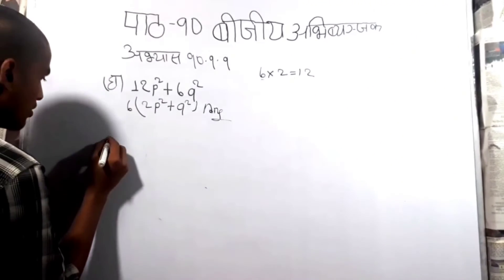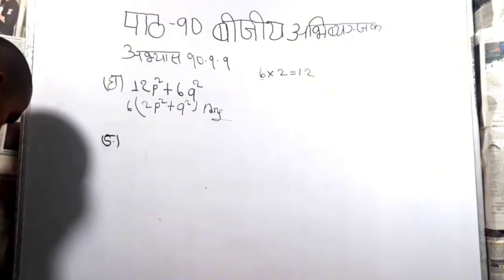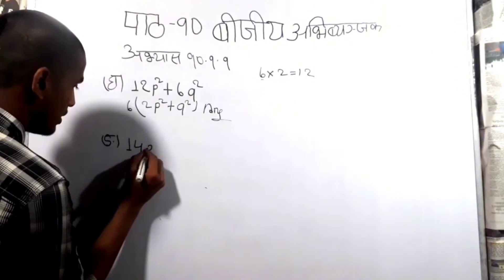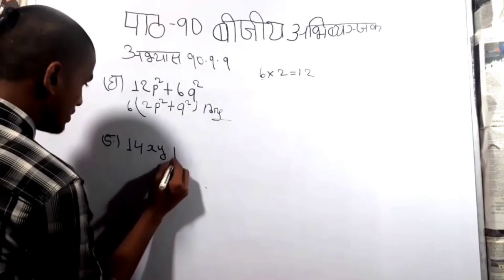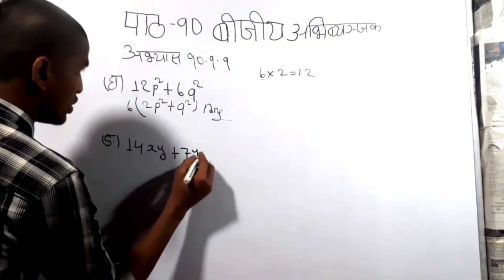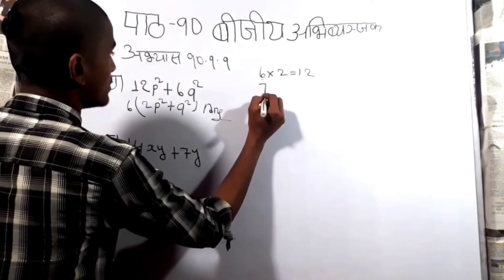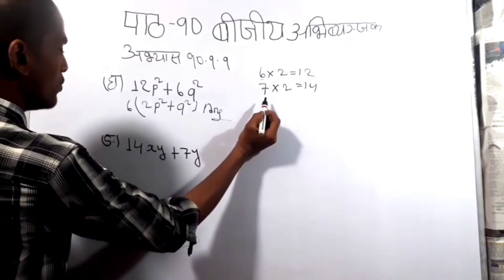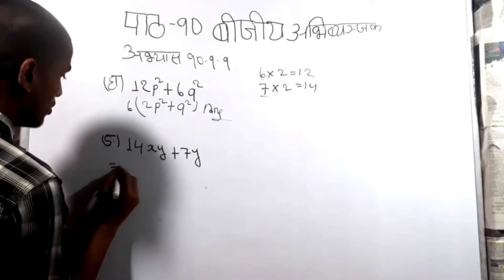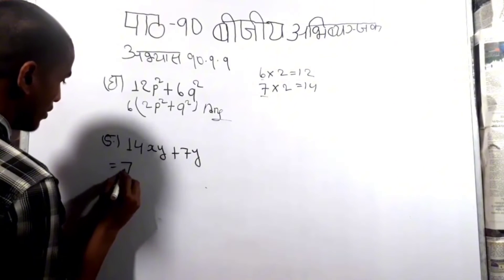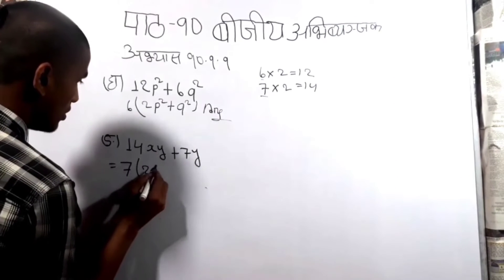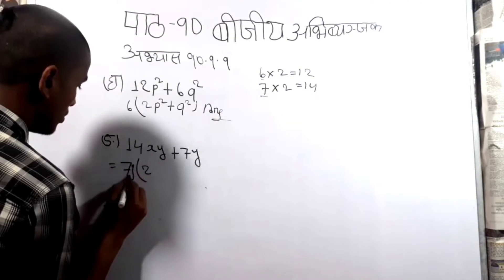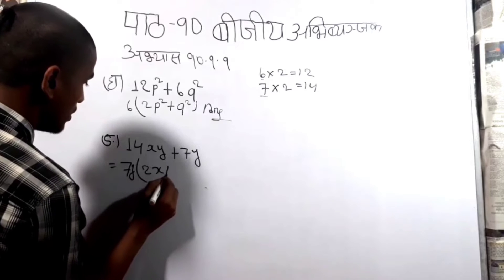This is the answer to our number. The answer is 42xy plus 7y. The answer is 72y. You can see the answer is 72y. This is the answer, 72y. The answer is 2x.